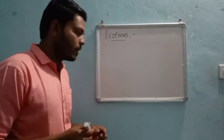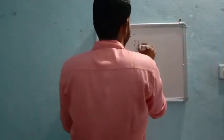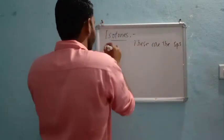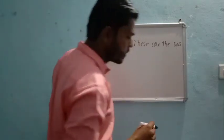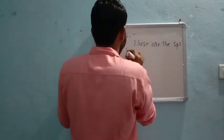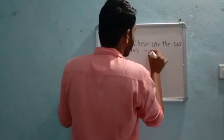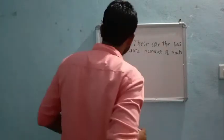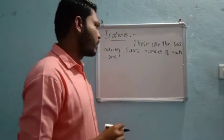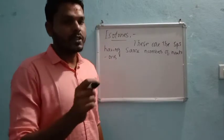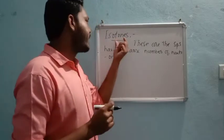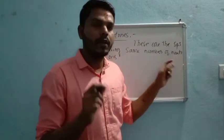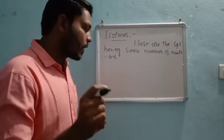Isotones are species having the same number of neutrons. If these chemical species are having the same number of neutrons, then such species are called isotones. We already know how to calculate the number of neutrons present in any given chemical species.